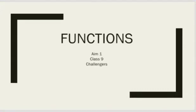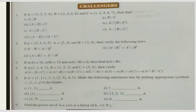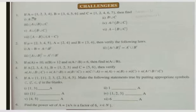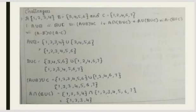Hi everyone, welcome to Vishwa Bloom. Today we are looking at Class 9 Functions, Aim 1 Challenges. Let's start. This is Aim 1 Challenges. The first question is A equals bracket {1, 2, 3, 4} and B is given. Now we will do the first equation and solve each part to get an idea.